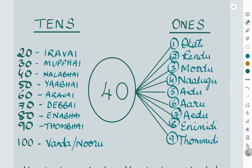The same pattern applies to all tens groups. Just as 20 and 1 gives you 21 up to 29, then 30 and 1 up to 39, and so on with 40 to 49. The same thing applies to all numbers up to 'enabhai okati', 'enabhai rendu', up to 'enabhai tummidi', and then 90 — so 91 up to 99 is 'tumbhai okati' through 'tumbhai tummidi'.